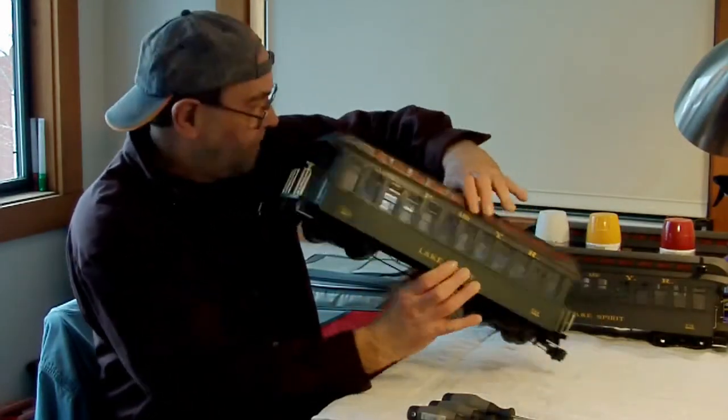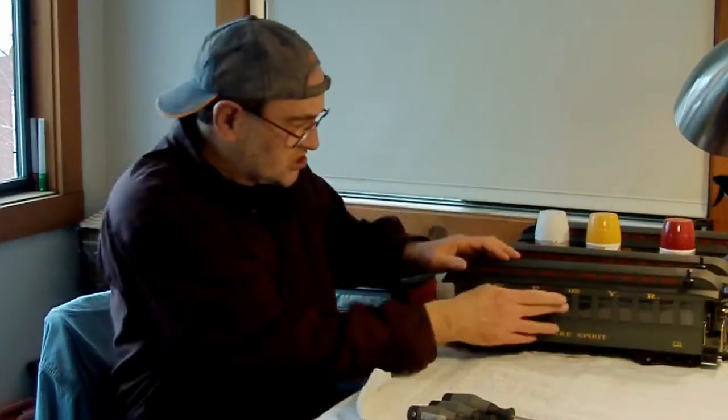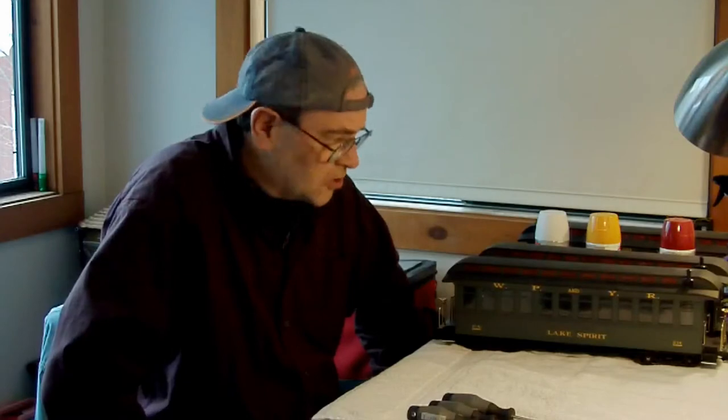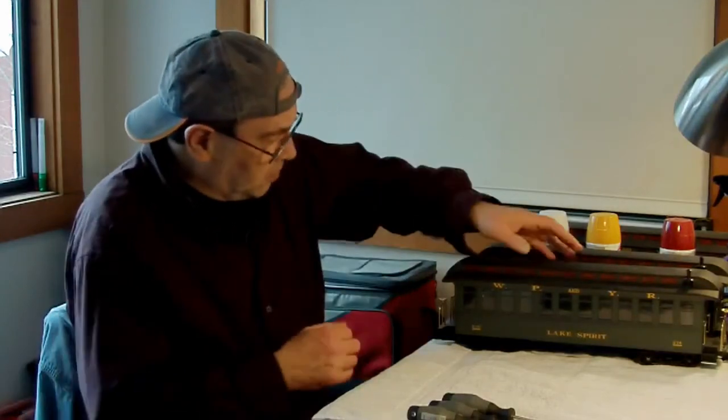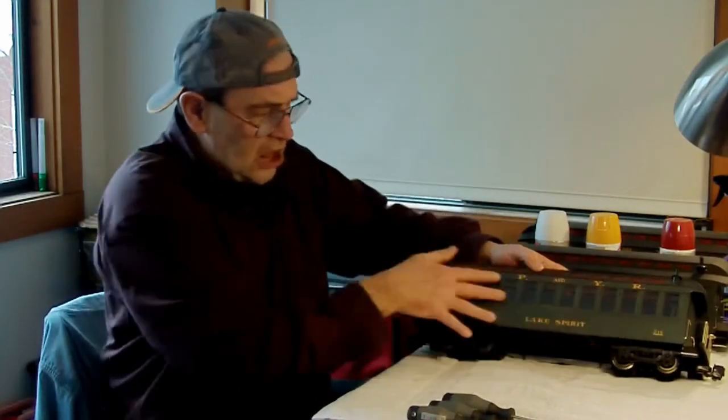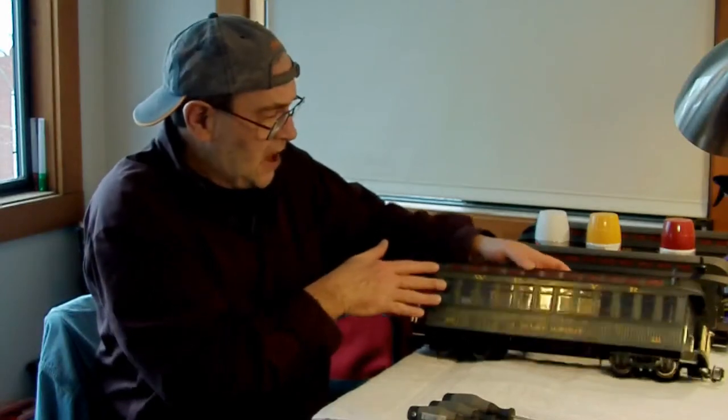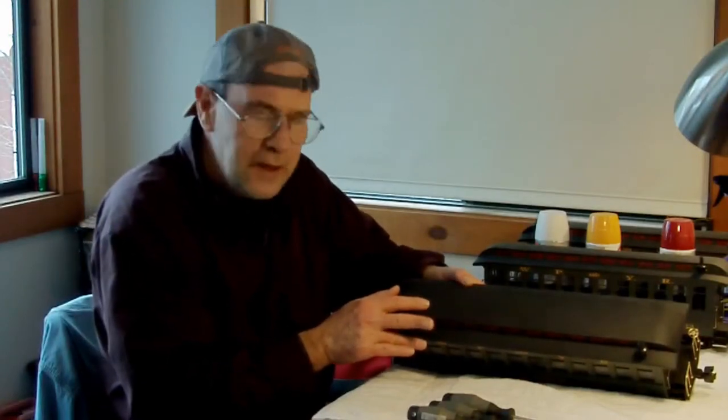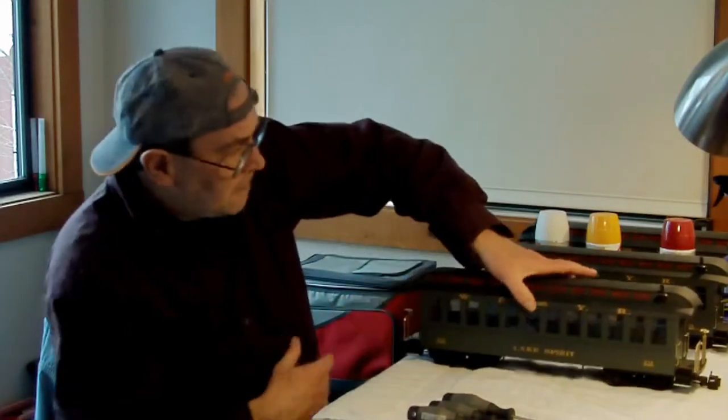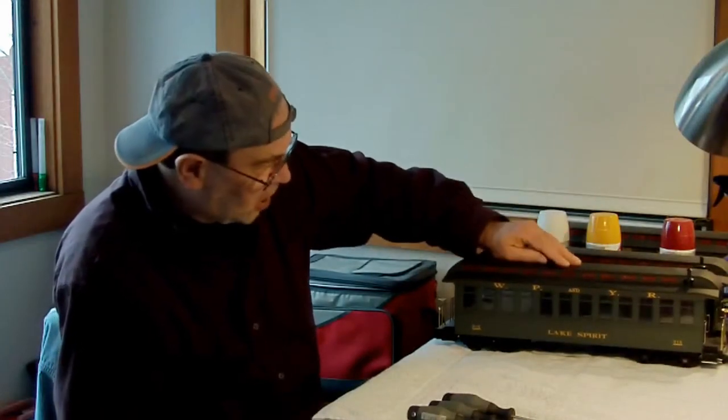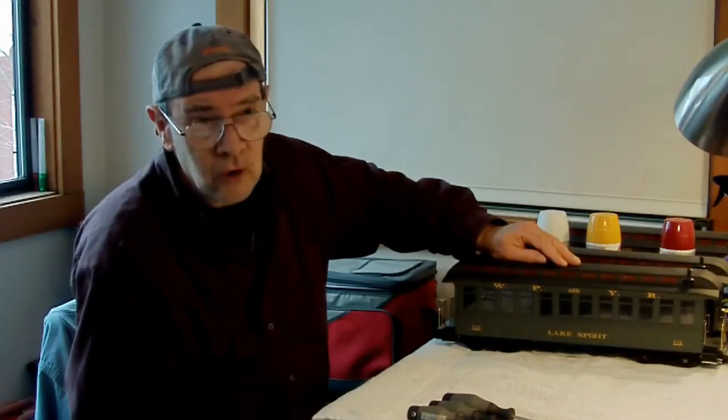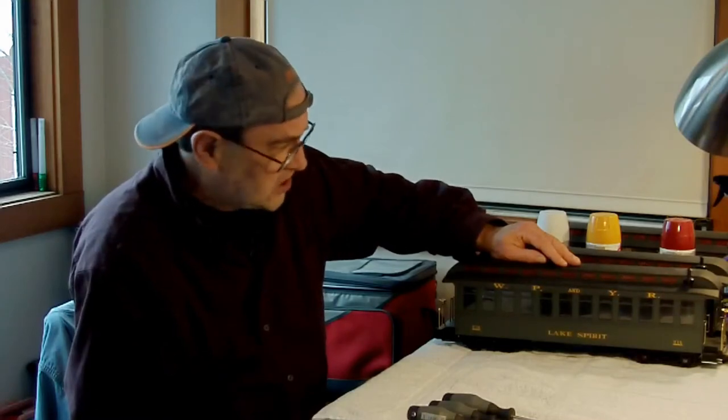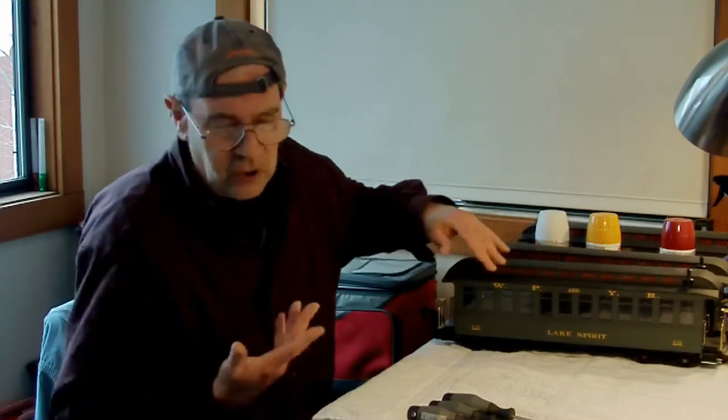They're just Bachmann coaches, observation cars, baggage cars, etc. And what we're going to try to do is repaint them in our railroad's colors. We decided our colors for the Plattsburgh and Poverty Railroad would be red cars with yellow trim and black roofs. I purchased these cars on eBay auctions online over the last two years. I've got about 12 of them, which is enough for me.